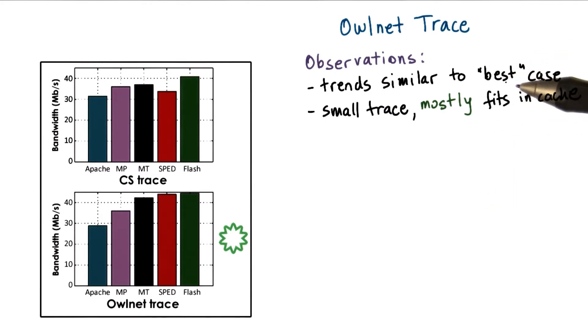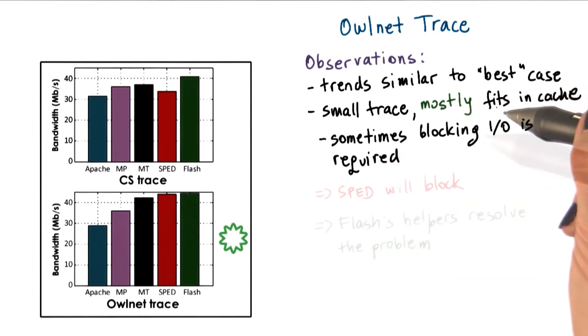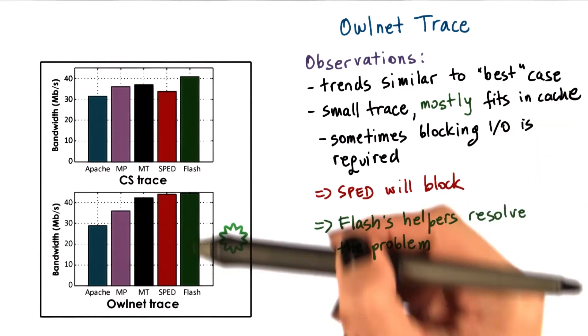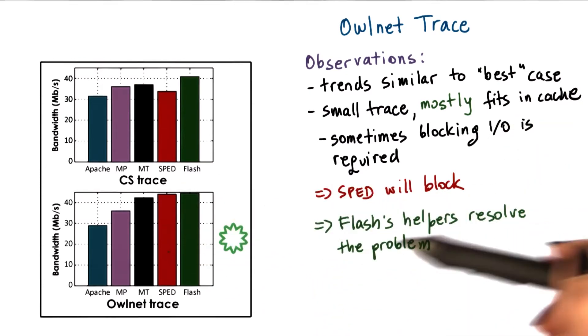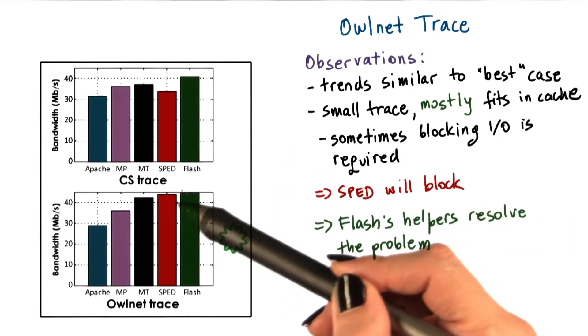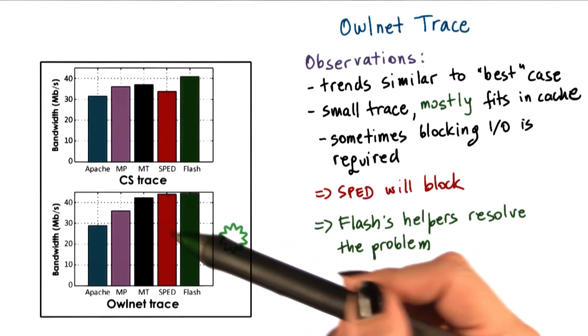Sometimes, however, blocking IO is required. It mostly fits in the cache. Given this, given the blocking IO possibility, sped will occasionally block, whereas in flash, the helper processes will resolve the problem. And that's why we see here that the performance of flash is slightly higher than the performance of the sped.